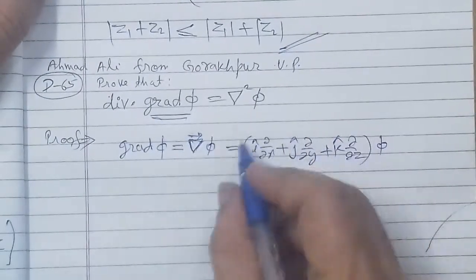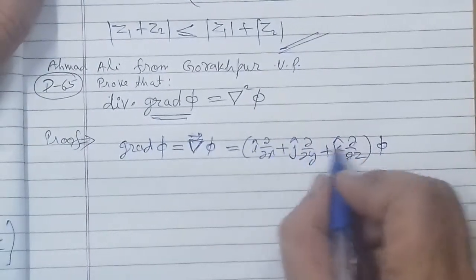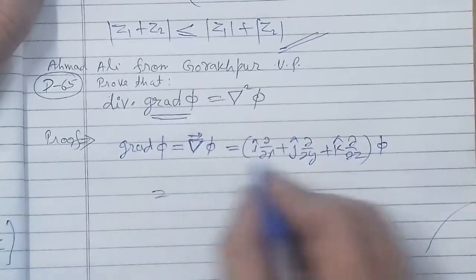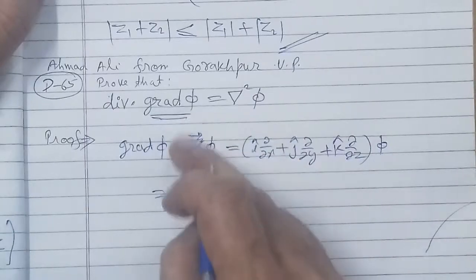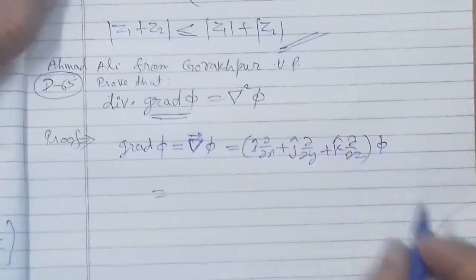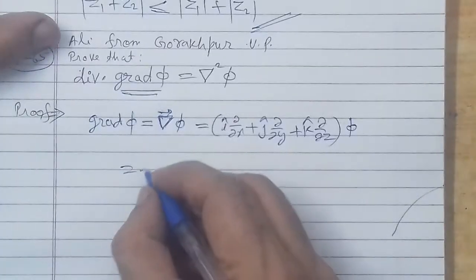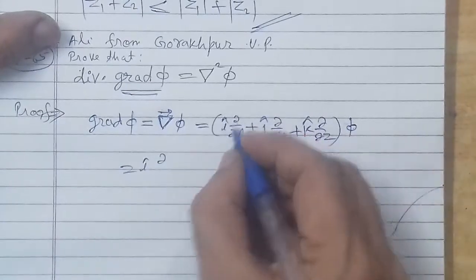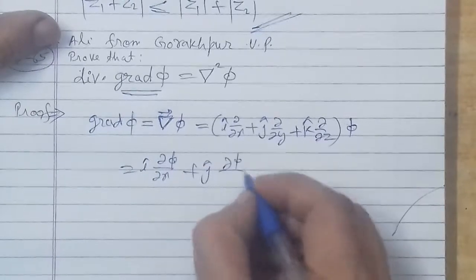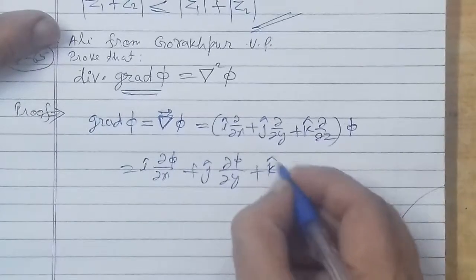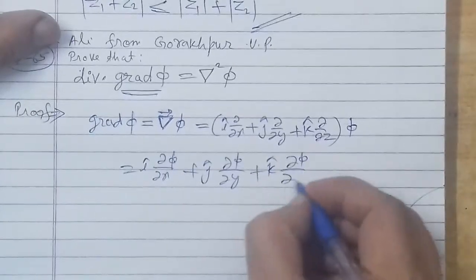This operator will operate. So the operator will operate, so phi will come on all three. Keep in mind that this is not multiplication, rather this operator is operating on the function. Phi is a function of x, y, z. So i into, when this operates, then del phi over del x plus j cap del phi over del y plus k cap del phi over del z. This will be the value of gradient.